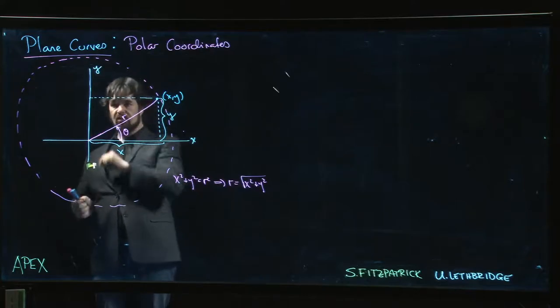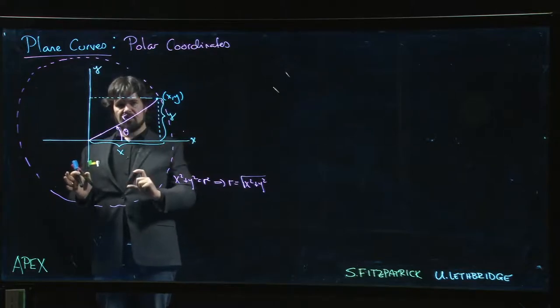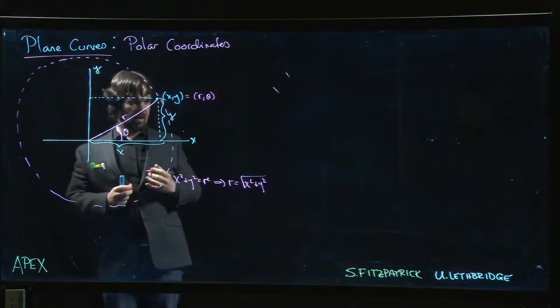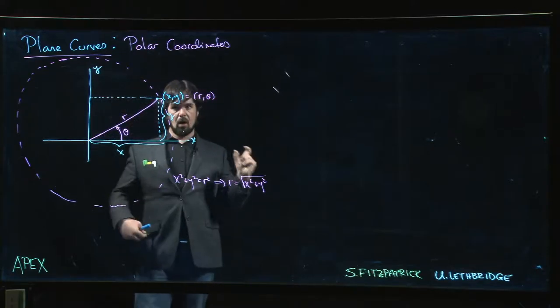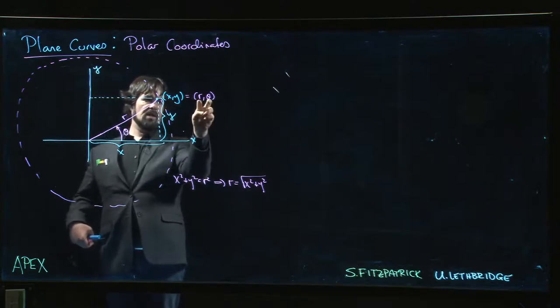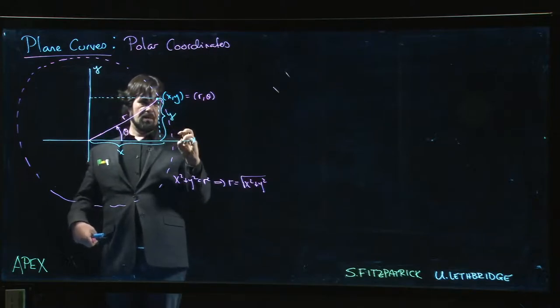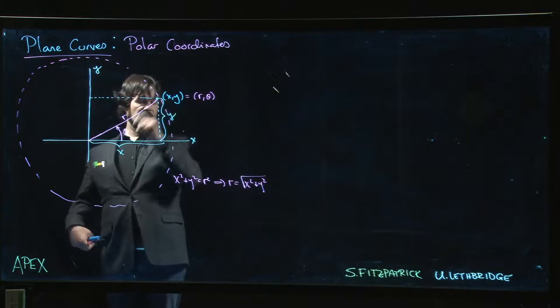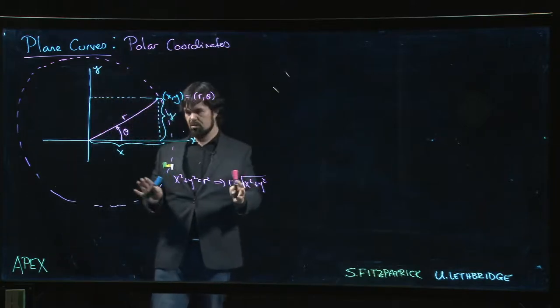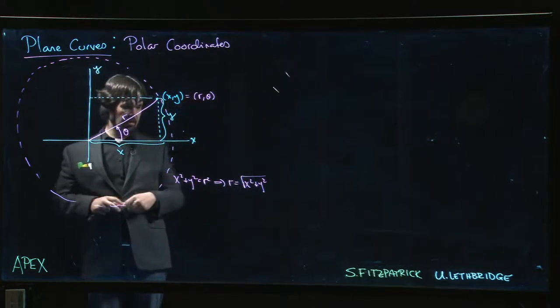Using r and theta as coordinates, for a given r and theta you will get to a particular point. So if I give you these two numbers you're going to know exactly which point we're talking about. But there might be more than one set of numbers that describes that particular point. That's an issue we're willing to live with because it actually simplifies things quite a bit in a lot of problems.